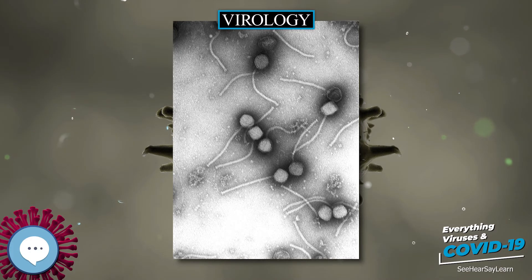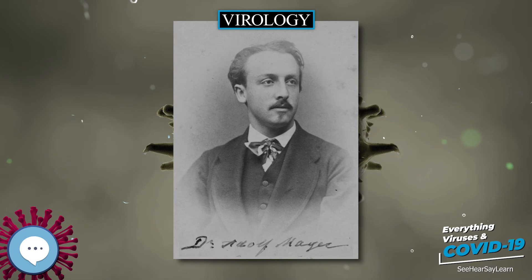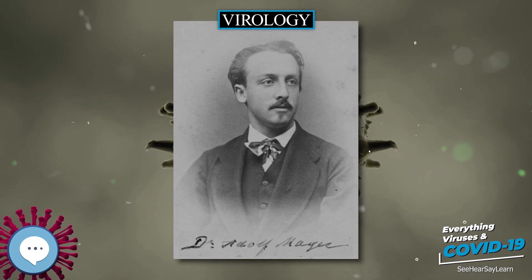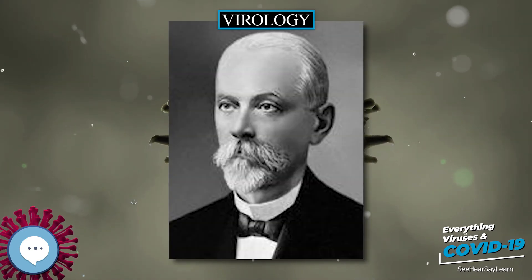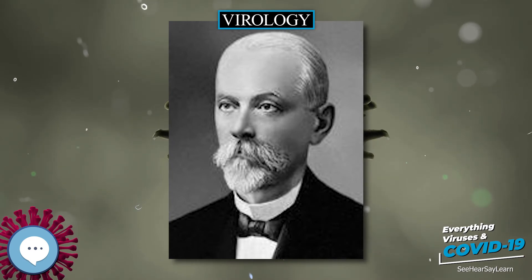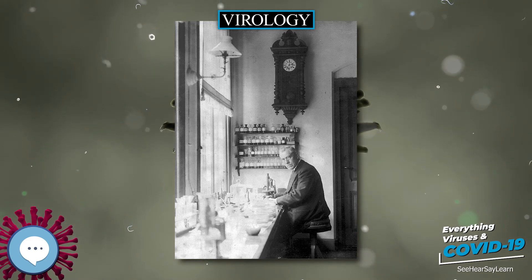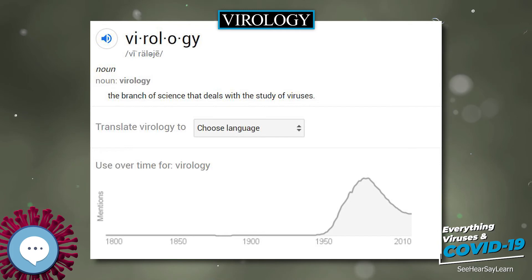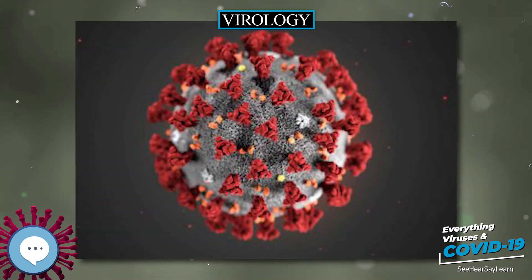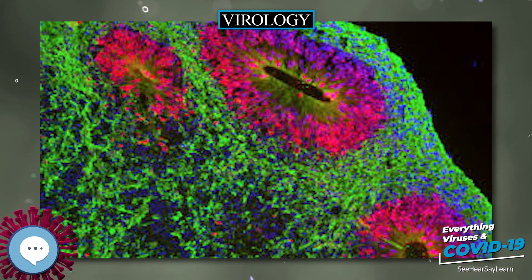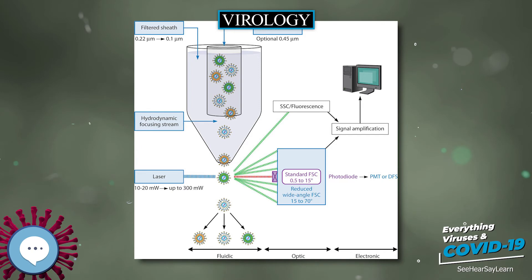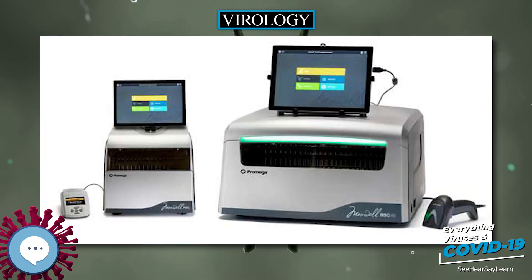As bacteria could be grown easily in culture, this led to an explosion of virology research. The cause of the devastating Spanish flu pandemic of 1918 was initially unclear. In late 1918, French scientists showed that a filter-passing virus could transmit the disease to people and animals, fulfilling Koch's postulates. In 1926 it was shown that scarlet fever is caused by a bacterium that is infected by a certain bacteriophage. In 1931 it was shown that influenza virus could be grown in fertilized chicken eggs, a method that is still used today to produce vaccines.